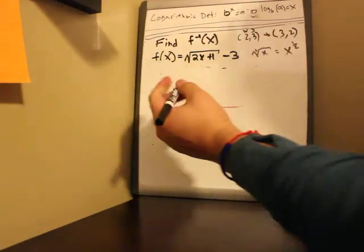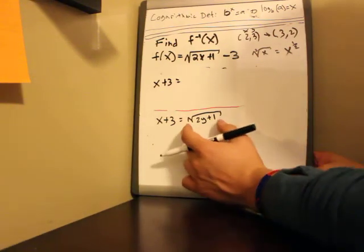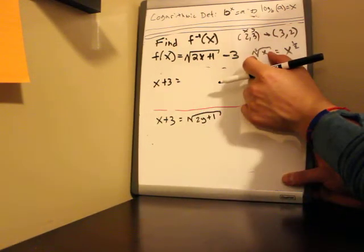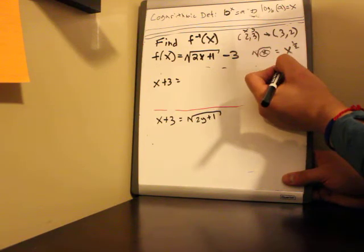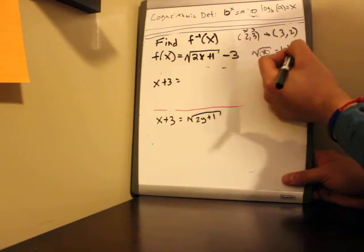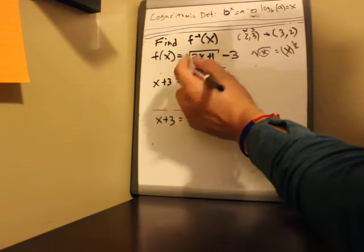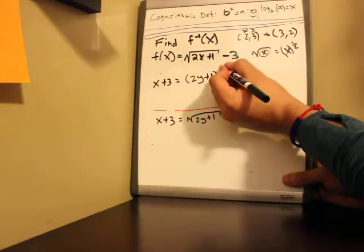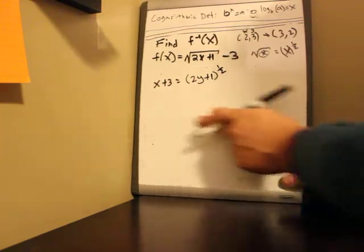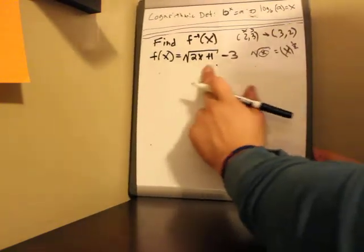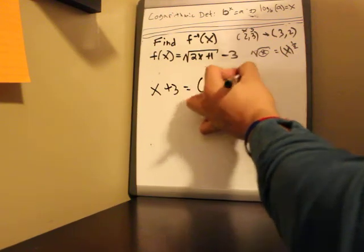I just wanted to give those examples. The nice thing is you've got the rewind button to go back in case you need to look at something one more time. So the square root of x is the same as x raised to 1/2, meaning anything inside the square root is just that quantity raised to the 1/2. So we can rewrite this as x plus 3 equals (2y plus 1) raised to the 1/2.